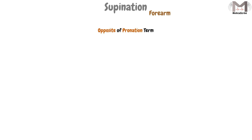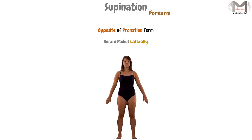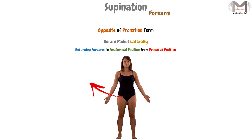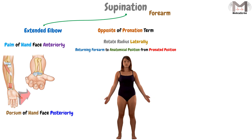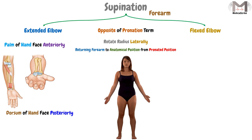Supination, on the other hand, is the exact opposite of pronation. We rotate the radius laterally, returning the forearm to its anatomical position from a pronated position. If we supinate an extended elbow, the palm of the hand will face anteriorly while the dorsum of the hand will face posteriorly.